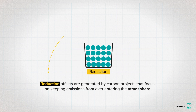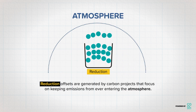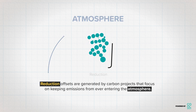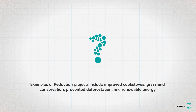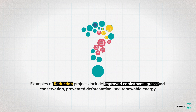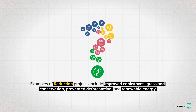Reduction offsets are generated by carbon projects that focus on keeping emissions from ever entering the atmosphere. Examples of reduction projects include improved cookstoves, grassland conservation, prevented deforestation, and renewable energy.